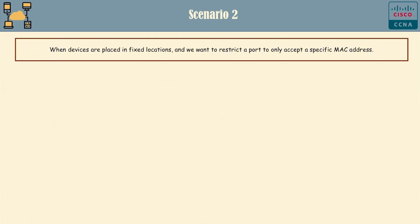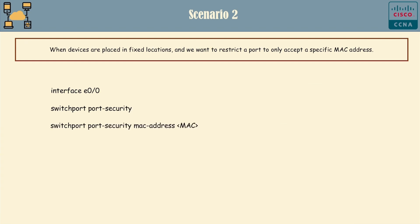Let's move on to Case 2, when devices are placed in fixed locations and we want to restrict a port to only accept a specific MAC address. Here are the commands. The switch will only accept this MAC address on the port, known as a static MAC. Result – When an unknown device is connected, the port will be disabled.